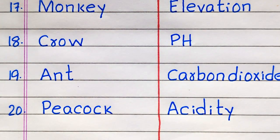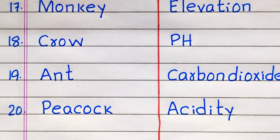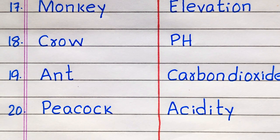Nineteenth biotic factor is Ant, twentieth is Peacock. Nineteenth abiotic factor is Carbon Dioxide, twentieth is Acidity.